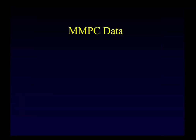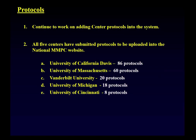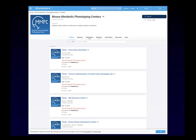What kind of data do we collect? We collect many types — not just metabolic phenotyping data. One of the most popular things people look for on our site are protocols. The five centers have submitted a number of protocols into our national resource. We've uploaded and exported all 218 MMPC protocols to protocols.io, where they are assigned DOIs, meaning they are permanently maintained and citable in manuscripts.